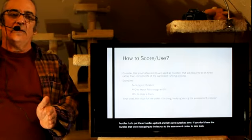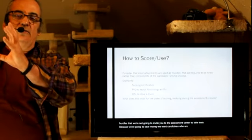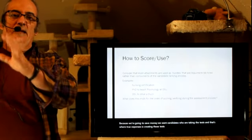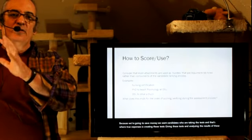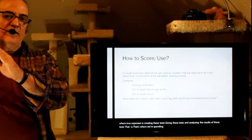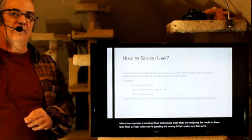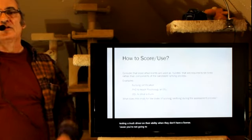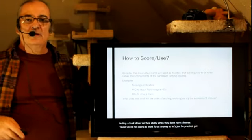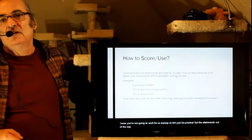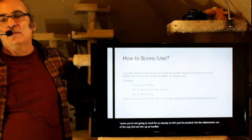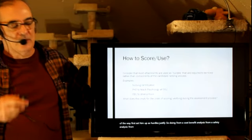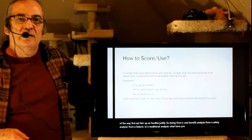Because we're going to save money. We want candidates who are taking the tests, and that's where our true expense is, is creating these tests, giving these tests, and analyzing the results of these tests. That's where we're spending the money. So let's make sure that we're not testing a truck driver on their ability when they don't have a license. Because they're not going to work for us anyway. So let's just be practical. Get the attainments out of the way first. Set them up as hurdles. Justify so doing from a cost-benefit analysis, from a safety analysis, from a historic or a traditional analysis. And then get on to the testing after that.